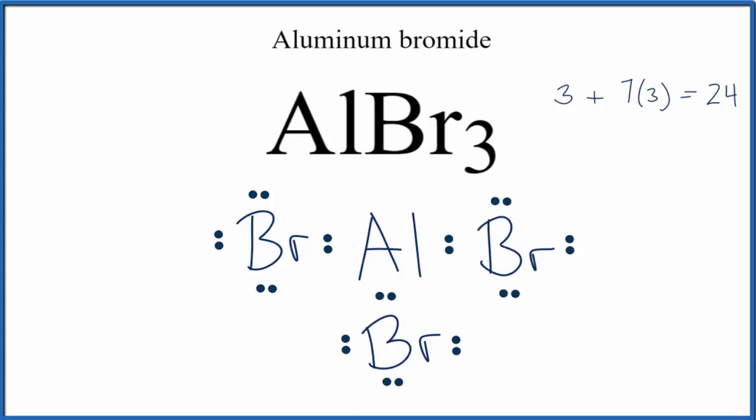And that's the Lewis structure for AlBr3, aluminum bromide. You might notice that aluminum does not have an octet. It only has six valence electrons. That's okay, it's an exception to the octet rule.